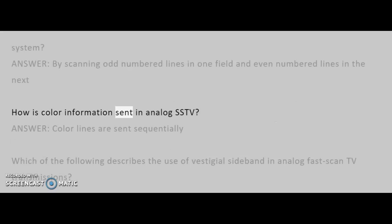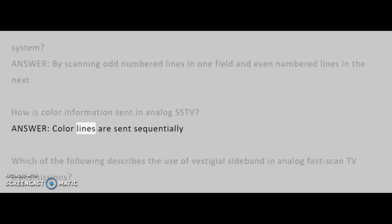How is color information sent in analog SSTV? Answer: Color lines are sent sequentially.